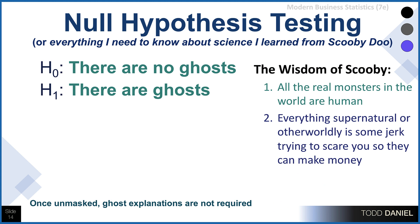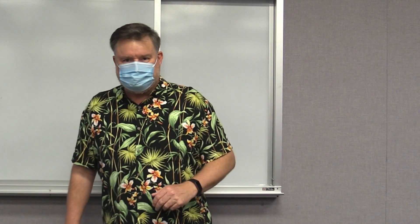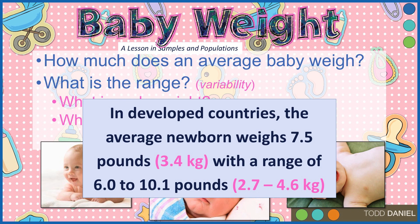The wisdom of Scooby-Doo: all the real monsters in the world are human, and everything supernatural is just some jerk trying to scare you so they can make money. Now let's apply this idea using babies and hypothesis testing. In developed countries, the average newborn weighs 7.5 pounds, or 3.4 kilograms, with a range of 6 to 10.1 pounds. That 7.5-pound figure is our population value.